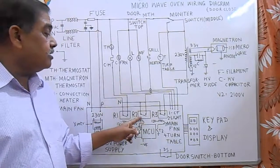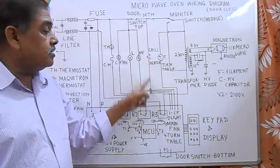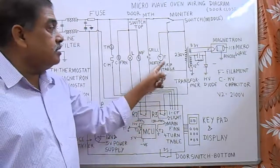R2 controls the grill heater, and R3 controls the microwave unit.